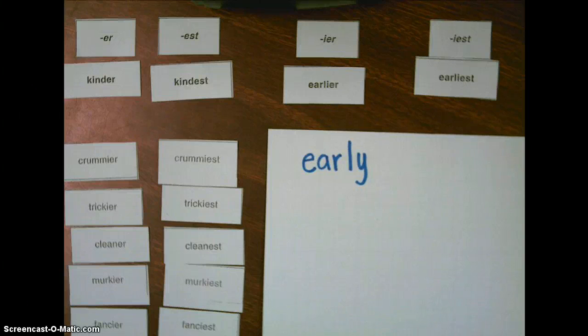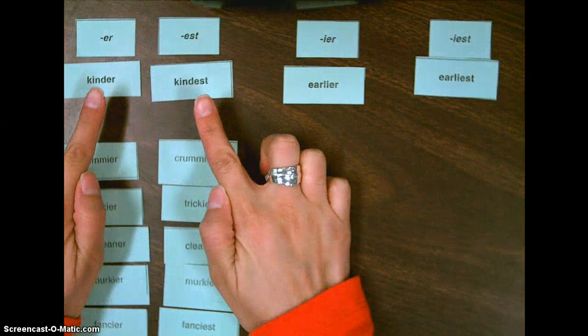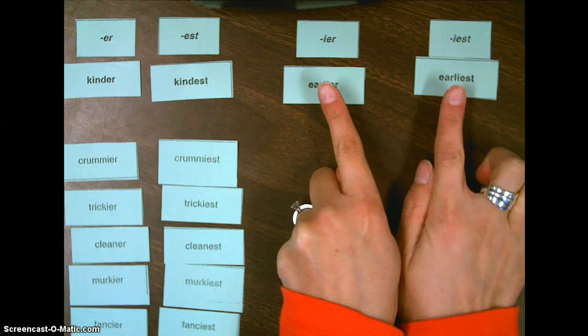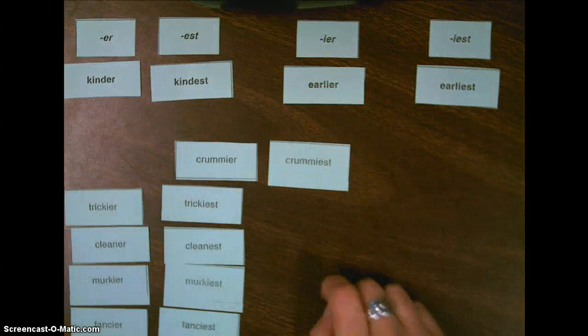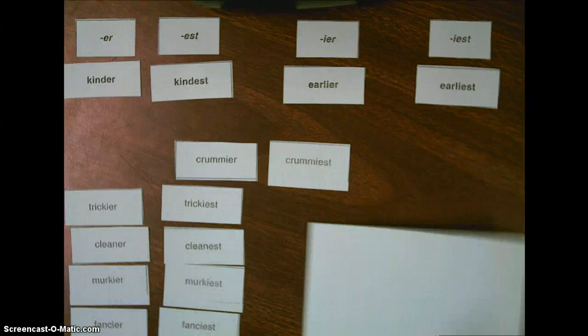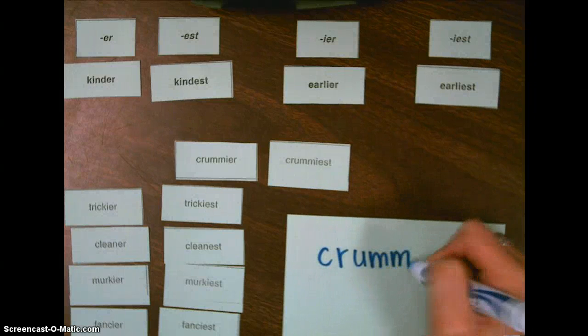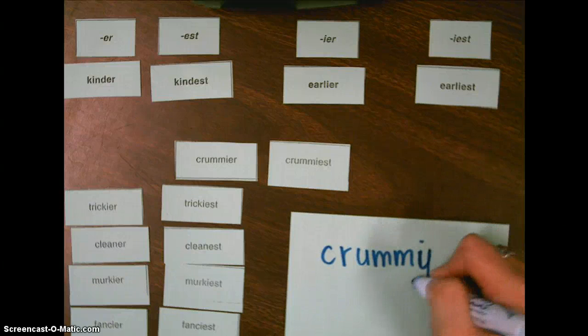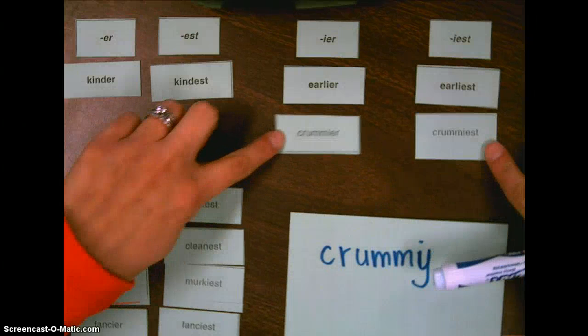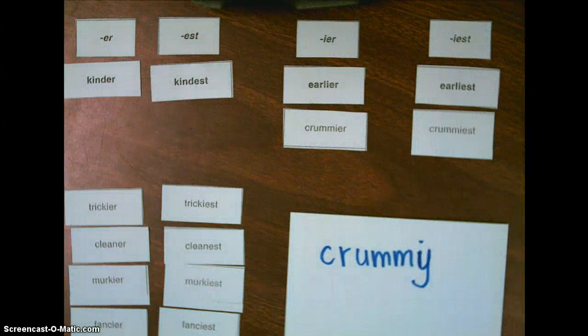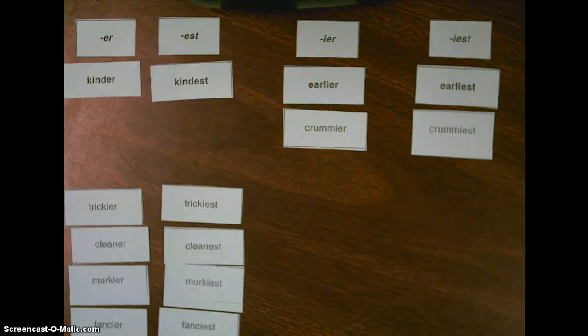Now, what I would like you to do is go through the rest of your pairs and decide if they are just E-R and E-S-T suffixes, or if there's a Y that you change at the end of the base word before you add an E-R and an E-S-T. Let's do another example. Crummier and crummiest. When we look at that word, is the base word crummy spelled C-R-U-M-M-I? That doesn't look right. It's C-R-U-M-M-Y. So when we write the word crummier and crummiest, when we add the suffix, we have to drop the Y and change it to an I.